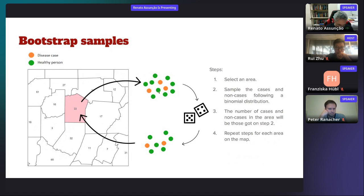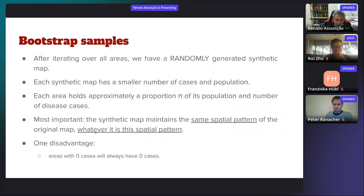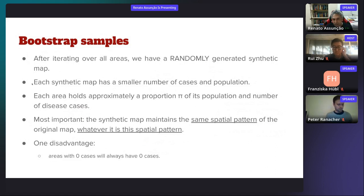This is a description of what we do in each area: we select a few people to be deleted — some are cases (red) and some are not (green). We then flip a coin and some are retained in the synthetic map. We repeat this for each area. At the end, after iterating over all areas, we have a randomly generated synthetic map. We can generate many such synthetic maps, each with a smaller number of cases and population. Each area holds approximately a proportion pi of its population and disease cases, but the synthetic map maintains the same spatial pattern of the original map.